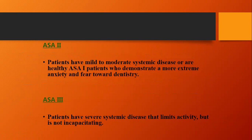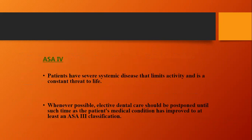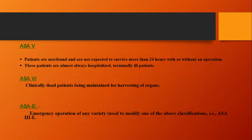ASA 3 patients have severe systemic disease that limits activity but is not incapacitating. ASA 4 patients have severe systemic disease that limits activity and is a constant threat to life — for these, we go for only elective dental care. ASA 5 patients are moribund and not expected to survive more than 24 hours, such as those on ventilation. ASA 6 are declared clinically dead, and ASA E refers to any emergency operation.